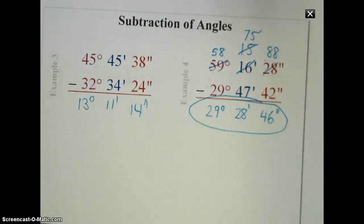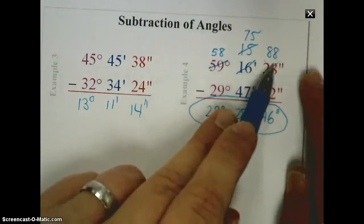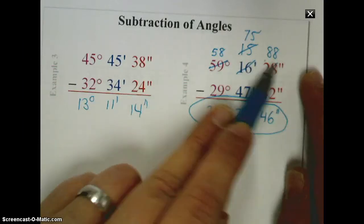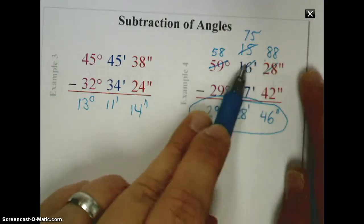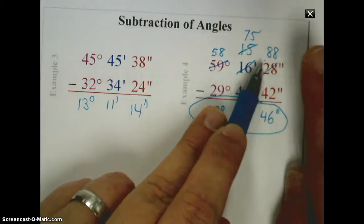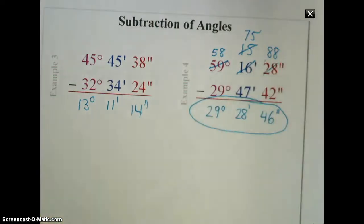The key with a subtraction problem is you cannot get negative degrees, minutes, and seconds as your solution. So if you have this issue, you need to borrow from the column to the left. And knowing, of course, there's 60 seconds in one minute, and 60 minutes in one degree.